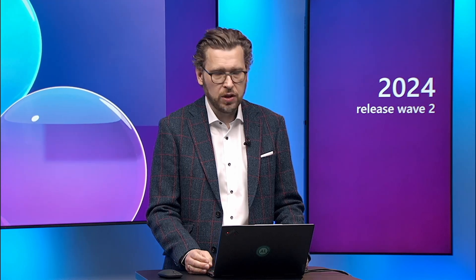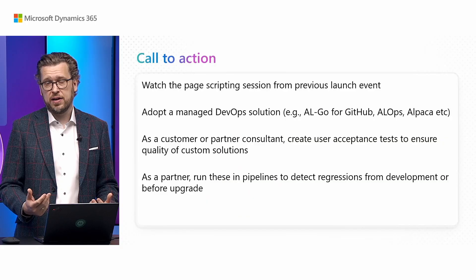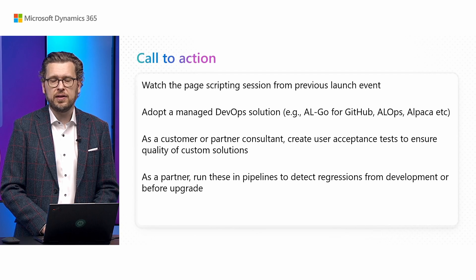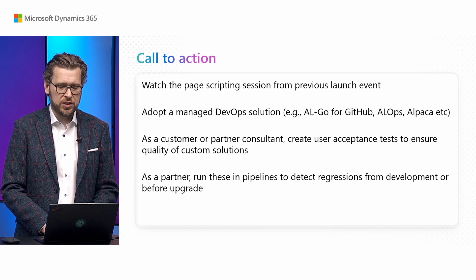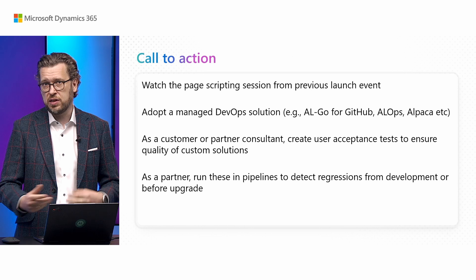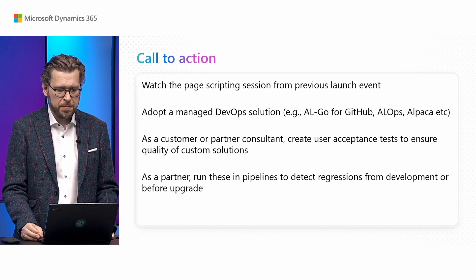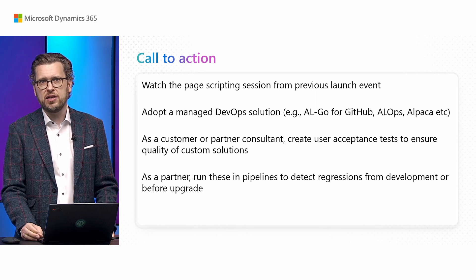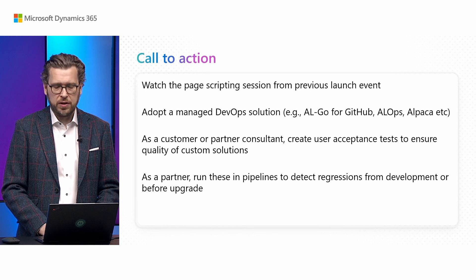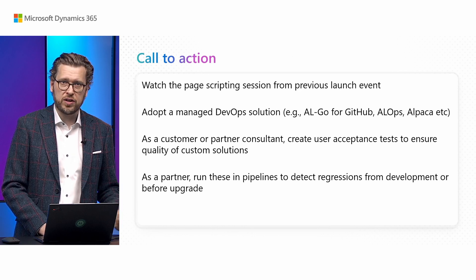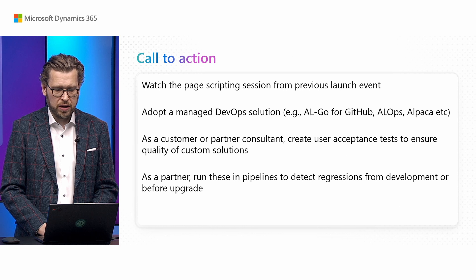The call to actions: watch the launch event recording from last time on the Page Scripting tool to understand what it can do and the benefit of that tool. Also adopt a managed solution for DevOps — ALGO for GitHub, ALOPS, or Alpaca could be options for that.